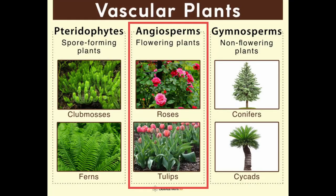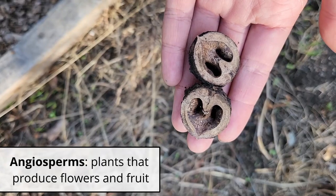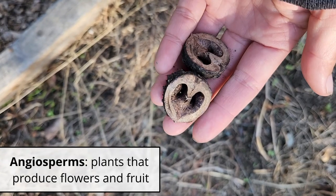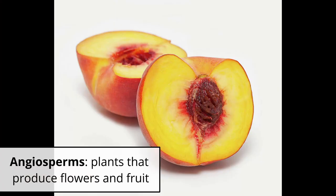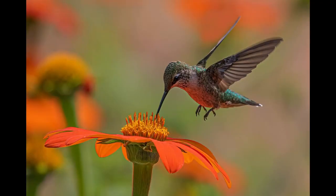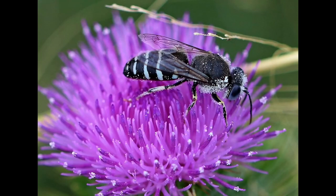By contrast, for angiosperms, the seeds are covered by what we traditionally think of as fruit. Angiosperms have a different strategy of reproduction using flowers.